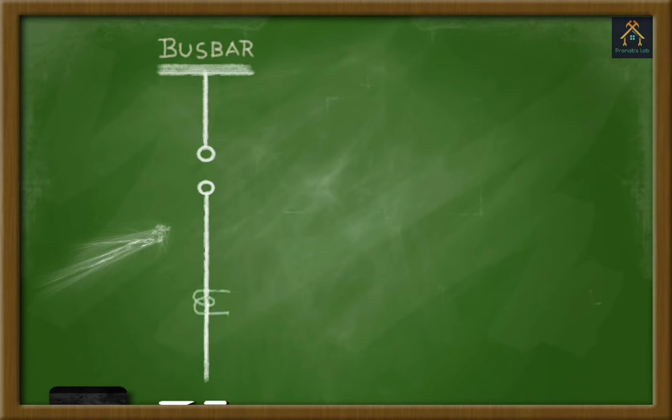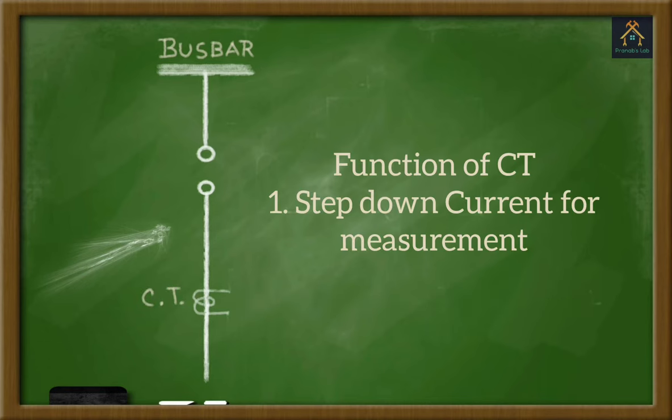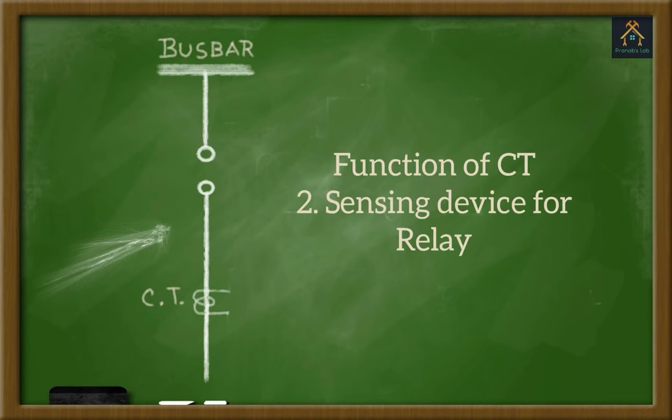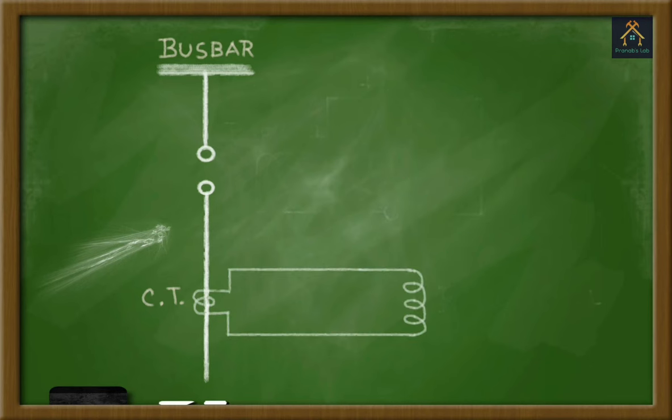Now, a CT that means current transformer is placed in that line. Basically, a CT is used to perform two basic functions. Firstly, to step down the current and measure the line current at a certain ratio and secondly, it works as a sensing element of a relay. In the figure, you can see the CT secondary terminals are connected with a relay coil.